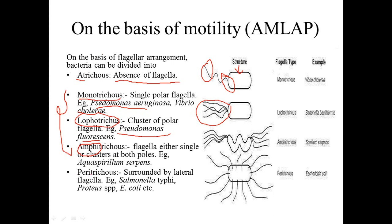Next is the Peritricus. The word 'peri' means peripheral. In the Peritricus flagella arrangement, the flagella are distributed over the whole surface of the bacteria — located at both the polar end and the lateral end. The bacteria are surrounded by flagella in the case of Peritricus.